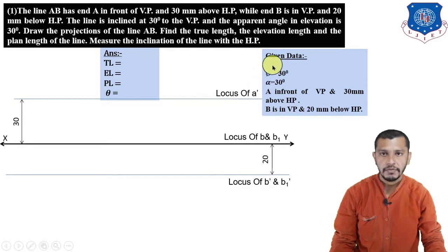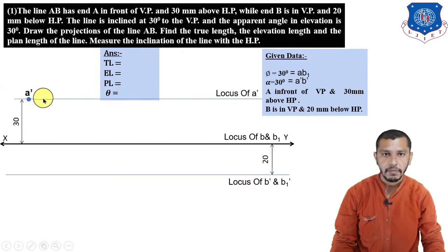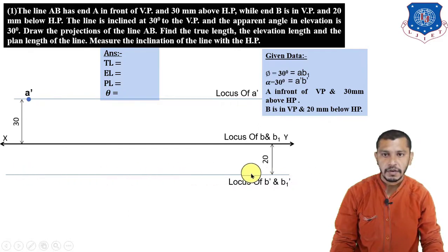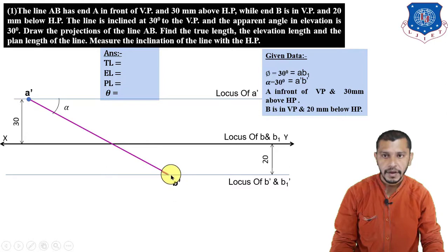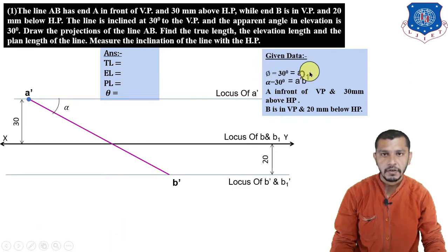We have α=30° and φ=30°. φ is the angle of AB1, which is our true length, and α is the angle of A'B', which is our elevation length. We have the locus of A' and the locus of B'. We will start with the elevation: mark point A' anywhere on the locus of A', then from A' draw a line inclined at 30 degrees downward. Since the locus of B' is below, from A' draw a line at angle α=30 degrees and here we get B'. For the φ angle we need B1, but since A's plan distance is unknown, we cannot draw the φ angle yet.